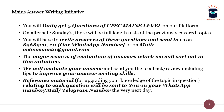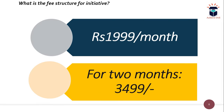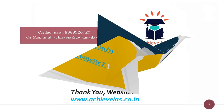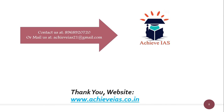As we are putting in a lot of effort, there is a fee structure: Rs. 1,999 per month, or you can join for 2 months at Rs. 3,999. For more months, the fee is reduced accordingly. If you are interested in joining, links are provided on screen and in the description box. For any doubts or queries, contact us at 8968920720 or mail us at achieveias21@gmail.com.